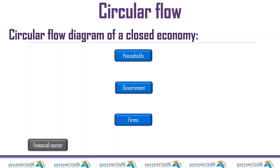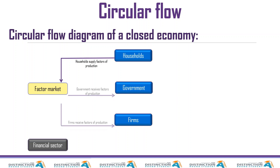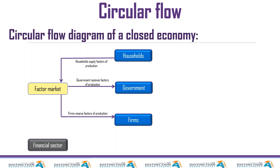Households are the main participants and main consumers of goods and services — when everything is being done, it's done for the households. Households own factors of production: they own land, labor, capital, and entrepreneurship. So they sell those four factors of production on the factor market. They're selling to government and firms. Government and firms receive these factors of production because they need them to produce — government needs them to produce public goods and services, and firms need them to produce goods and services.